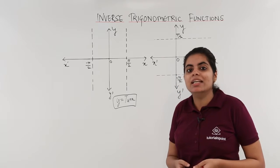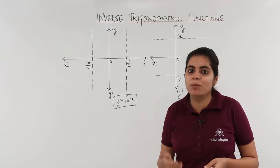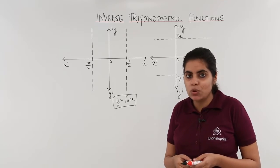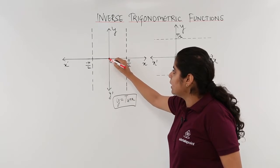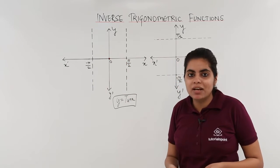I know the graph of tan x as we have already seen in our junior classes that tan 0 is what? Sin 0 upon cos 0. So it is 0 only. So tan 0 is my 0 only.